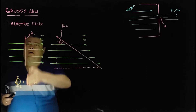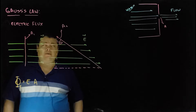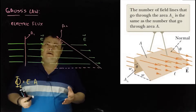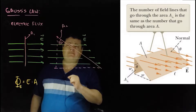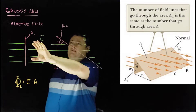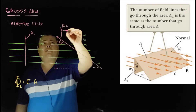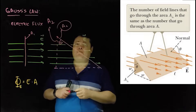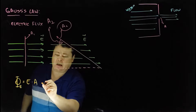Now let's consider a second situation where my surface is not exactly perpendicular to the electric field, but is slanted — it makes an angle theta with the direction perpendicular to the electric field. The surface A2 is bigger than my original surface A1. But the number of field lines going through A2 is the same as the number going through A1, so the flux should be the same. This shows that what really matters is not the total surface, but the surface perpendicular to the field, which is the surface itself multiplied by the cosine of the angle.